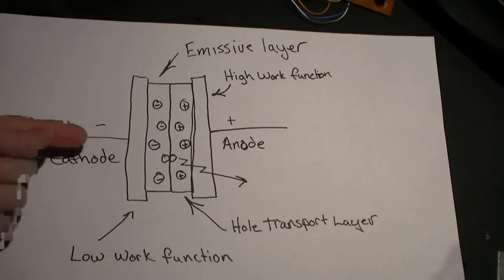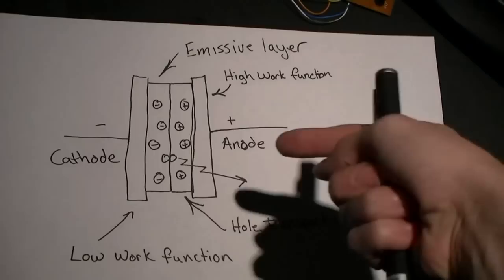For the anode, we'll use a high work function, which is more likely to accept electrons than give electrons. It will be the transparent conductor indium tin oxide on glass.